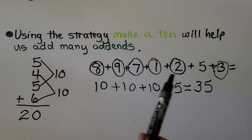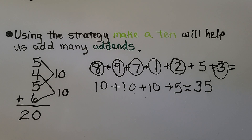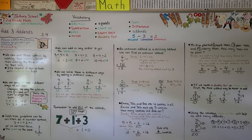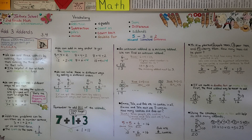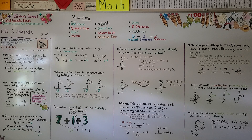By looking for addends that will make a ten, we can add many addends together very easily. Remember, when you're adding three addends, group them together to make doubles or to make tens so that you can add them quicker. Just don't forget to add the last addend. Our next lesson, 3.5, is going to be relate addition and subtraction — we're going to talk about fact families. I hope I'll see you there, and I hope you're doing well. Have a wonderful day!